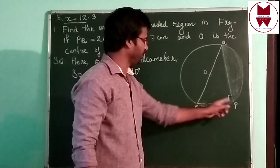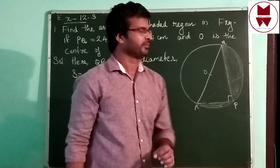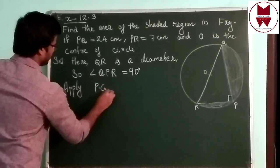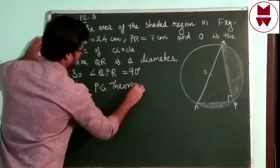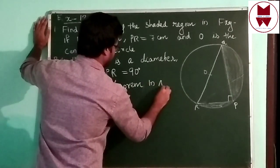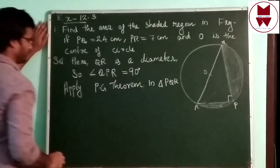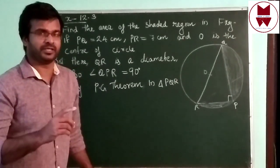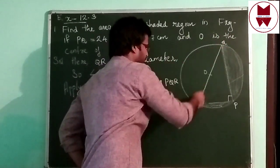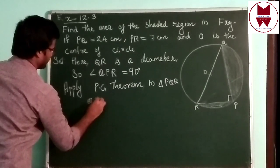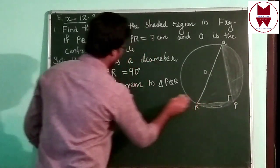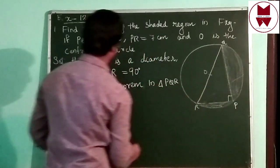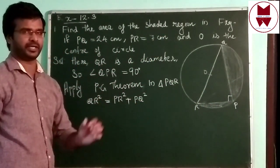Since QPR is 90 degrees, triangle QPR is a right angle triangle. We apply the Pythagoras theorem in triangle PQR. Pythagoras theorem: hypotenuse square equals base square plus perpendicular square. The hypotenuse in this triangle is QR. So QR² = PR² + PQ².